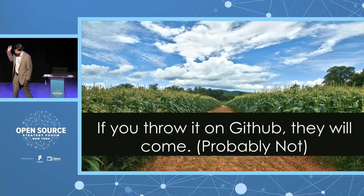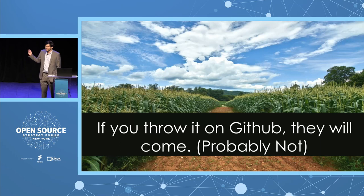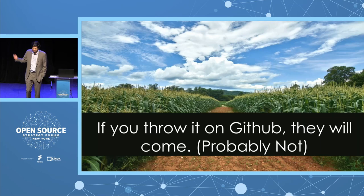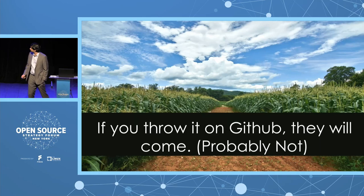The old Field of Dreams movie reference — you build it, they will come — doesn't apply here. Just throwing your open source program on GitHub and expecting to build a community around it? Probably not. It's not going to work that way. You'll just be lost in the forest. You've got millions of projects up on GitHub. The key to building a sustainable open source project is to build that ecosystem and a community around it.